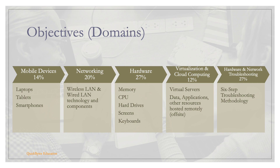Hardware is 27%, made up of memory, CPU, hard drives, screens, keyboards, etc. Virtualization and cloud computing is 12%, covering virtual servers, data and applications, and other resources hosted remotely off-site. Hardware and network troubleshooting is 27%, and we'll go over the six-step troubleshooting methodology for that domain.